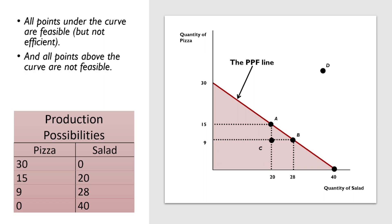All points under the curve are feasible, but they're not efficient because we're not using all of our resources. All the points above the curve are not feasible. We simply don't have enough resources to get there. And every point along the curve is feasible and efficient.